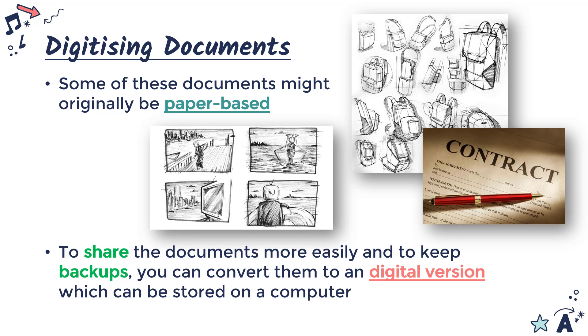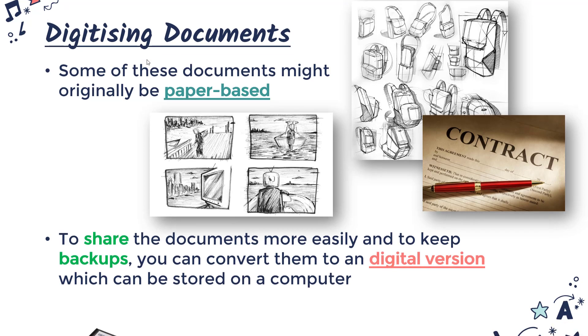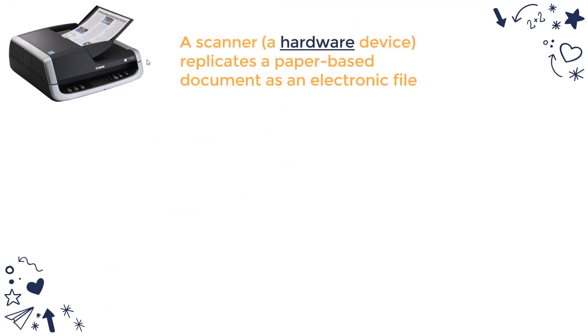We looked at what the word digital means in the very first video — digital really just means related to, or can be stored on, a computer. We also hear 'electronic versions' — same idea, just stored on a computer. Now to do this conversion, we can use a device like a scanner, which you would have come across before. It's really just a device which replicates a paper-based document and converts it into an electronic file, one which can be stored on a computer.